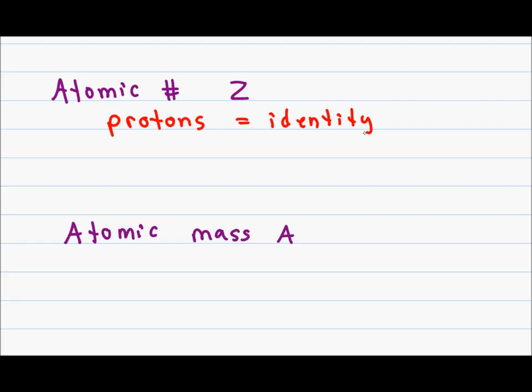If I look at the periodic table, which we'll do in the next video, and I look for the atom with one proton, I know that one proton is the atom hydrogen. If I were to add one proton to hydrogen, it's no longer hydrogen, but it's actually the element helium identified by two protons.